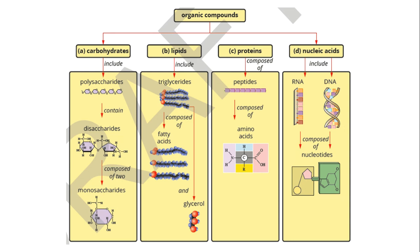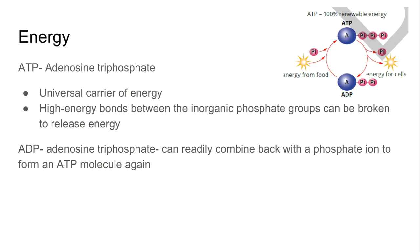Here we can see some organic compounds — carbohydrates, lipids, proteins, and nucleic acids — with some examples of what they might look like. When we talk about energy used by the cell, they use a form of energy known as adenosine triphosphate, otherwise known as ATP. It's the universal carrier of energy.